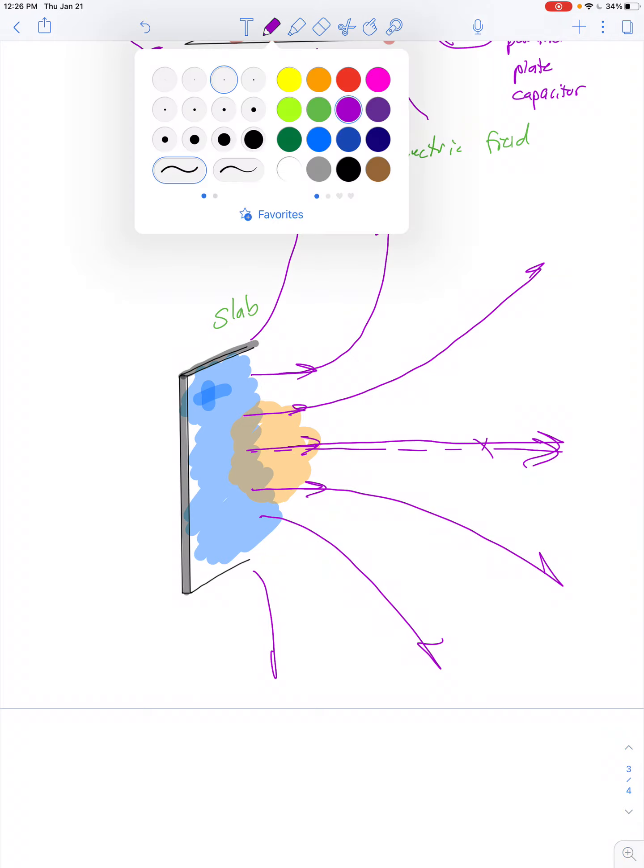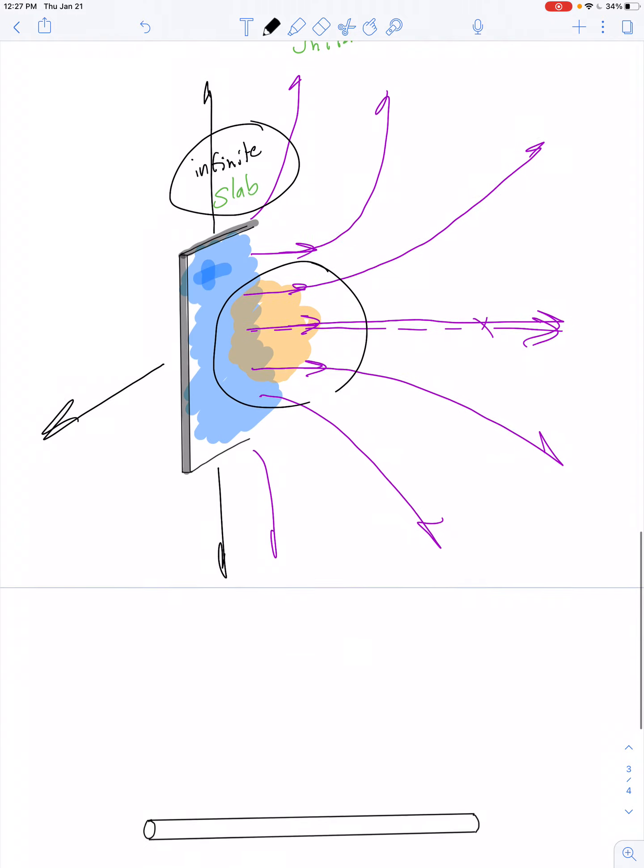Now, an interesting question would be, what happens if we extend the slab in all directions? We make it taller, we make it wider, and so it becomes, well, could we make it infinite? I don't know. It's a challenging concept, right? A two-dimensional object that's infinitely tall and infinitely wide, so think in terms of limits. In that case, then the region in which it's uniform becomes much greater, right? So for an infinite slab, the electric field really would be uniform.